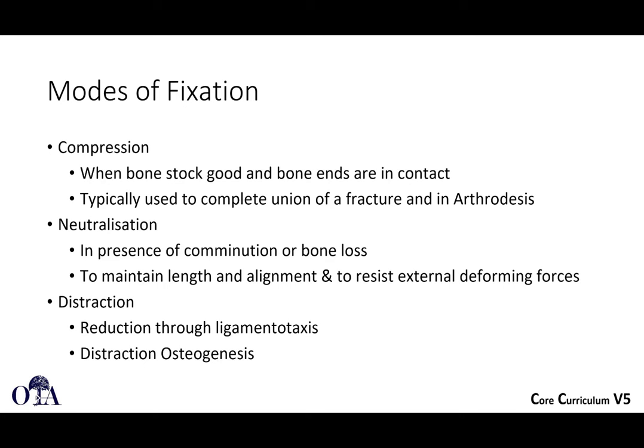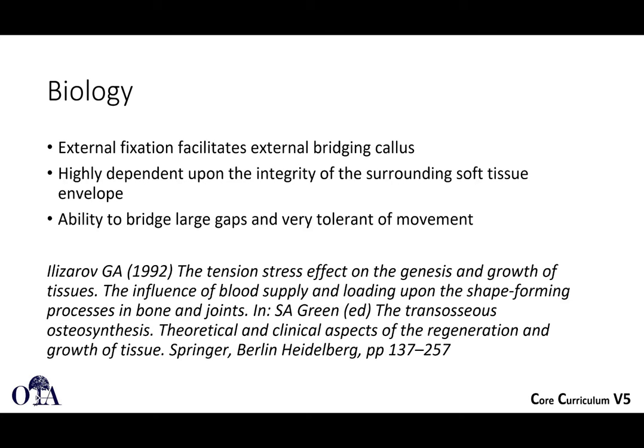Regarding different modes of fixation: an external fixator can be used in compression when you have good bone stock and can get bone ends in contact — this is used to complete union of a fracture or arthrodesis. It can be used for neutralization when you have comminution and bone loss and don't want to use bridge plating. Fixators can also be used in distraction mode, and if done according to distraction osteogenesis principles, you can actually generate bone while distracting. External fixation facilitates external bridging callus, highly dependent on the soft tissue envelope's integrity, and can bridge very large gaps to address bone loss.